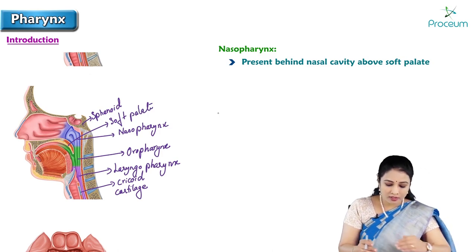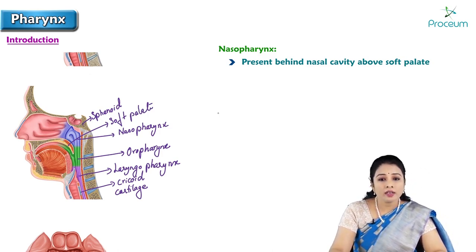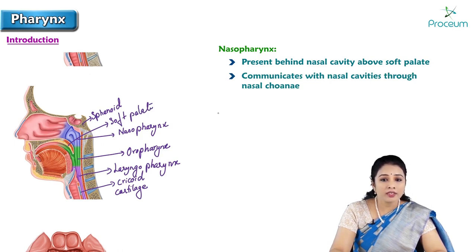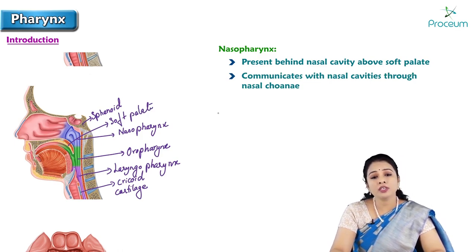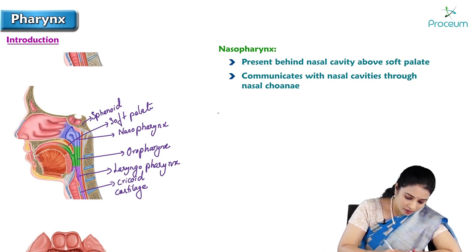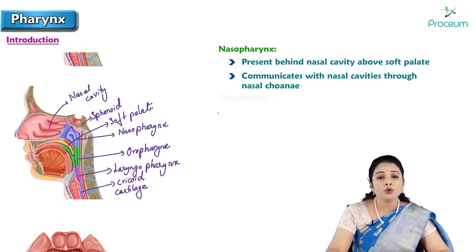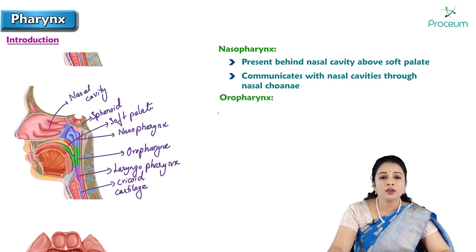The blue colored structure is the nasopharynx, and it communicates with the nasal cavities through the nasal choanae — that is, the posterior nasal apertures. Here is the nasal cavity. Oropharynx.